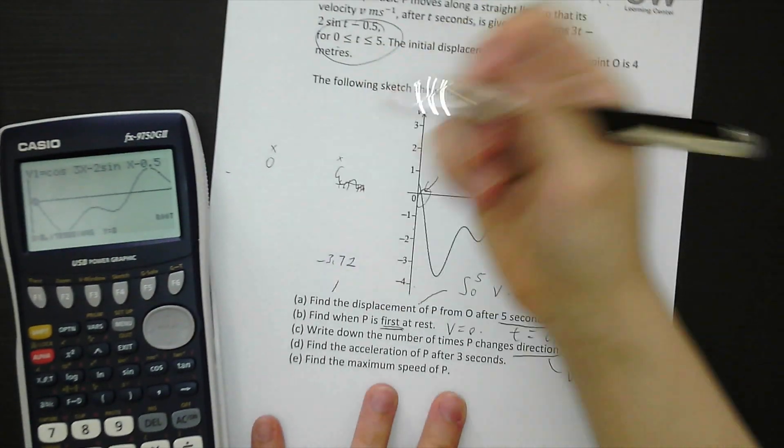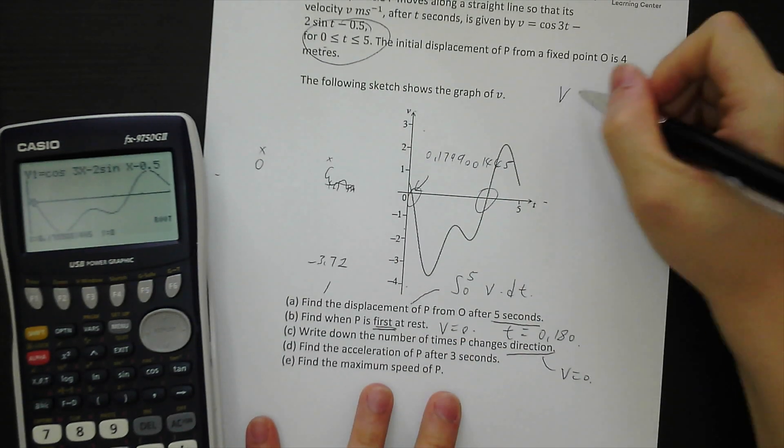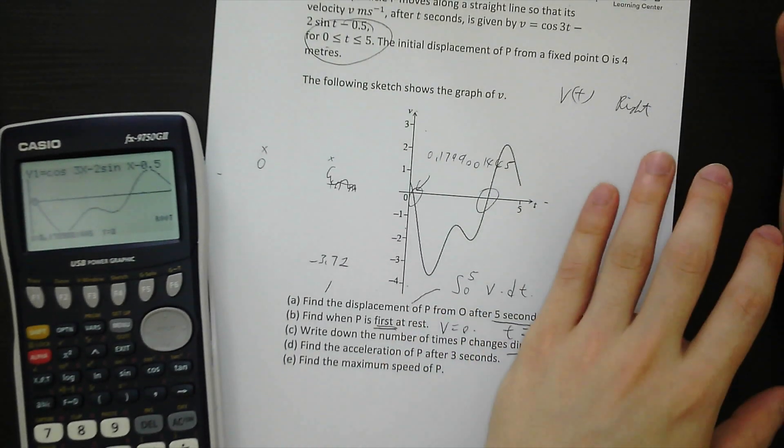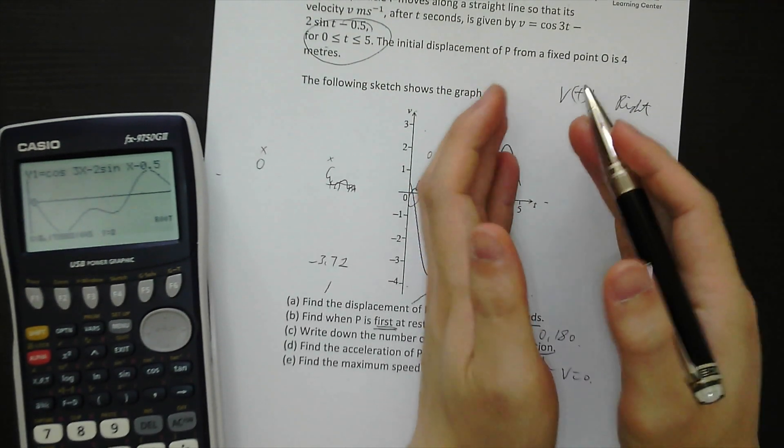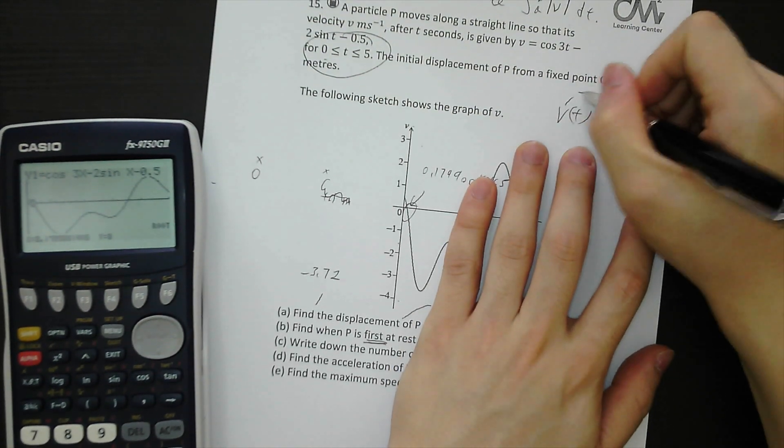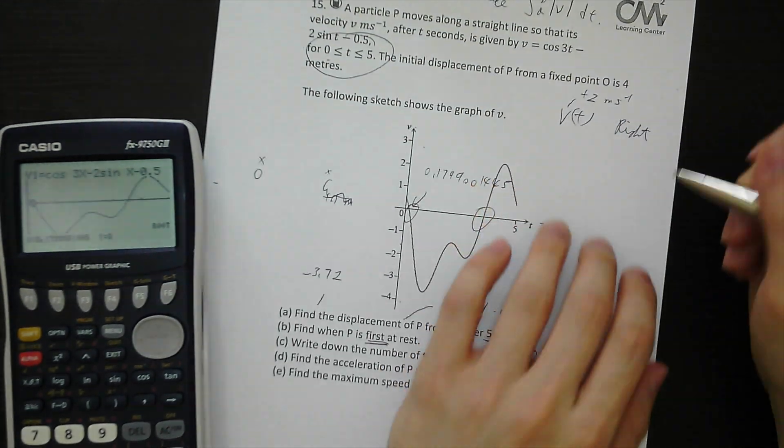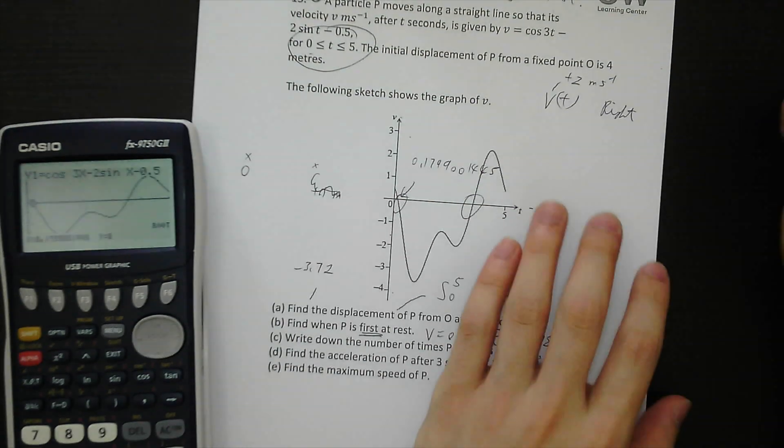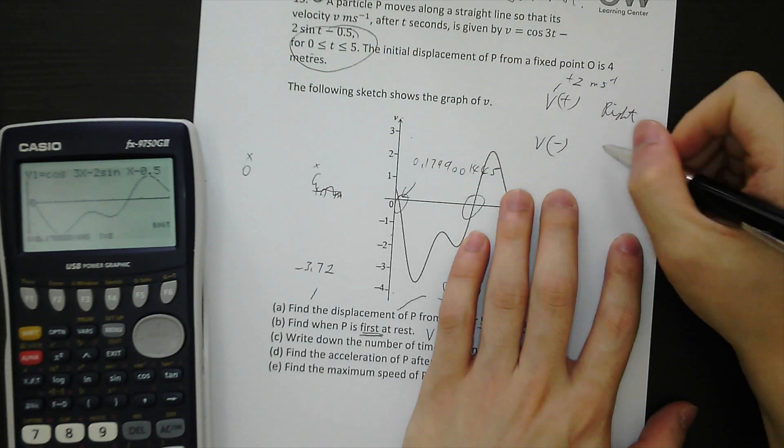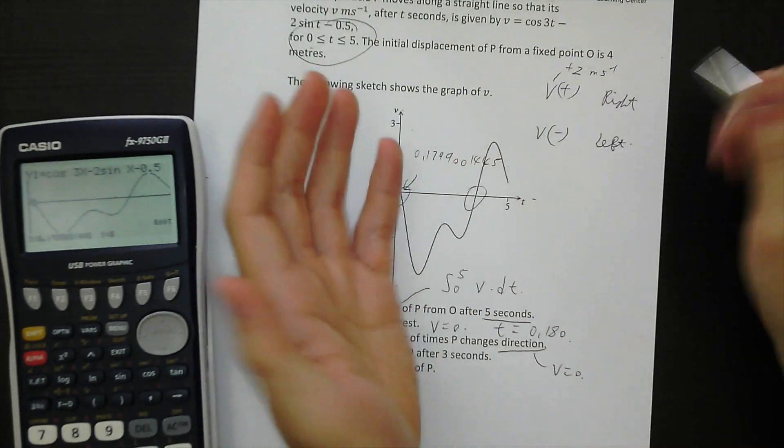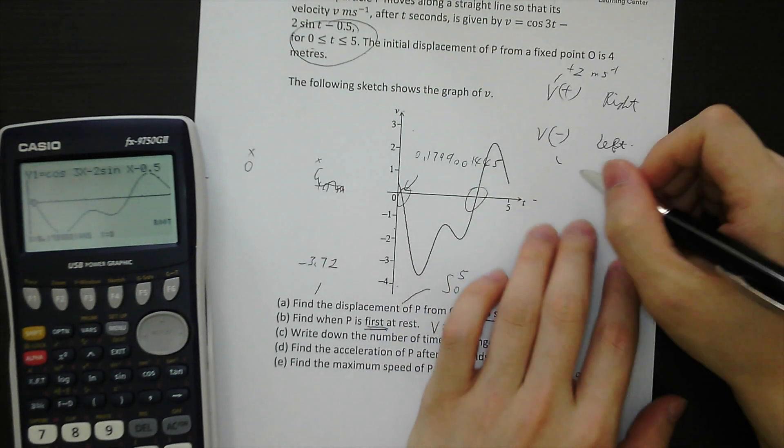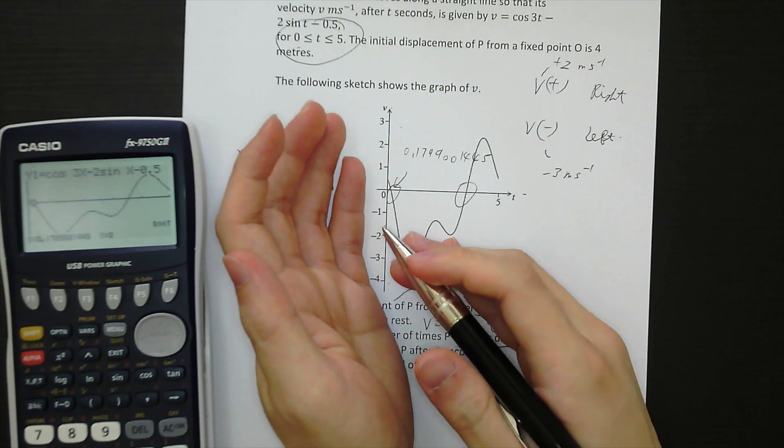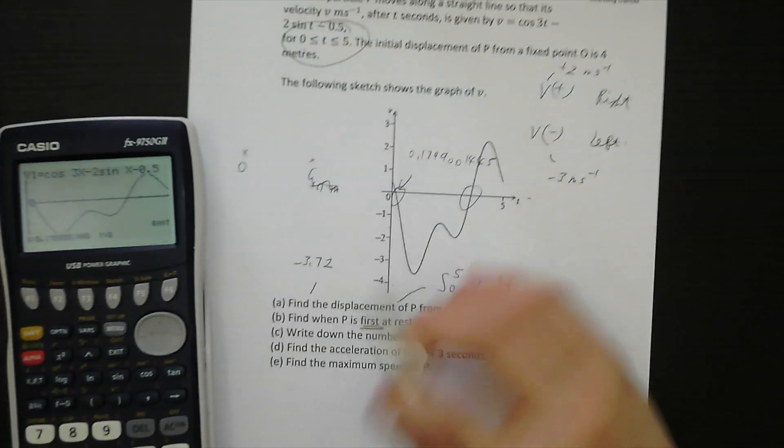Because velocity is positive means shift to the right-hand side. It's going to the right-hand side at that speed. Let's say the velocity is plus 2 meter per second. That means it's going to the right-hand side at the speed 2 meter per second. While velocity is negative, that means going to the left-hand side at that speed. Let's say the velocity is now negative 3 meter per second. That means going to the left-hand side at the speed 3 meter per second.